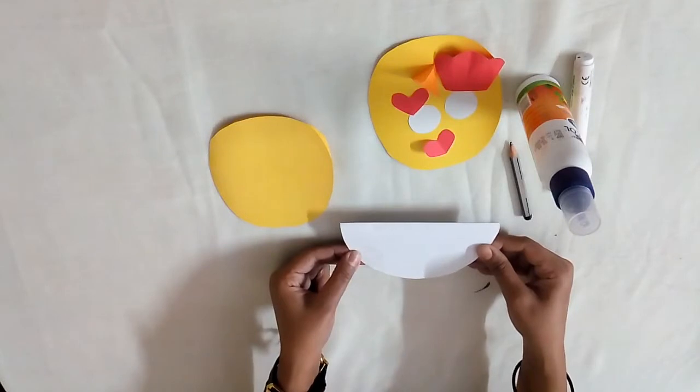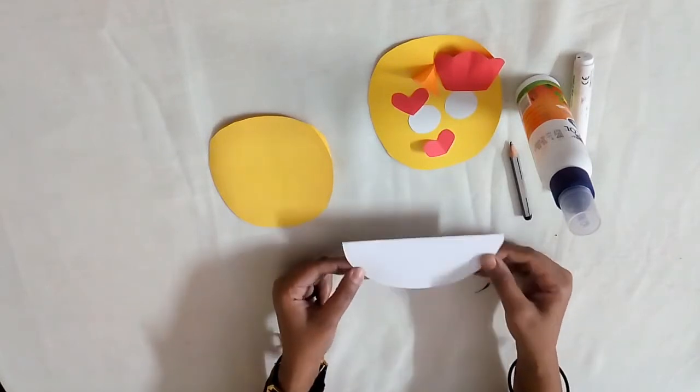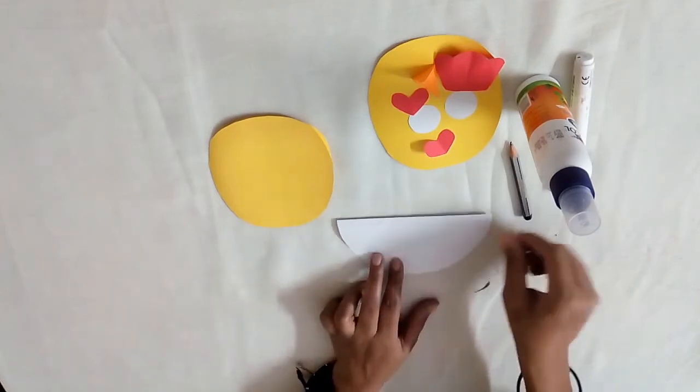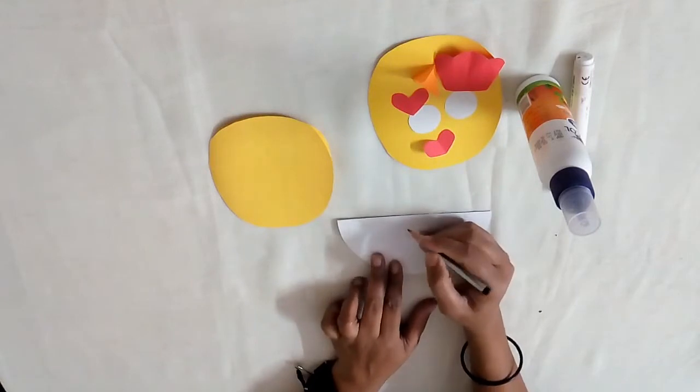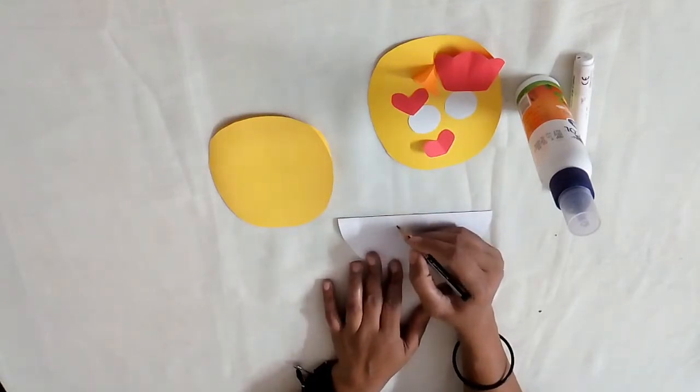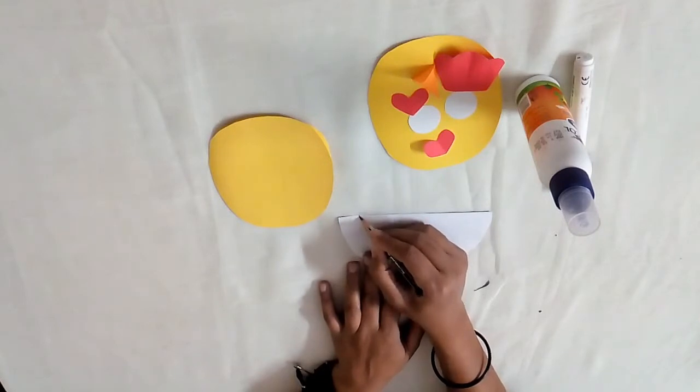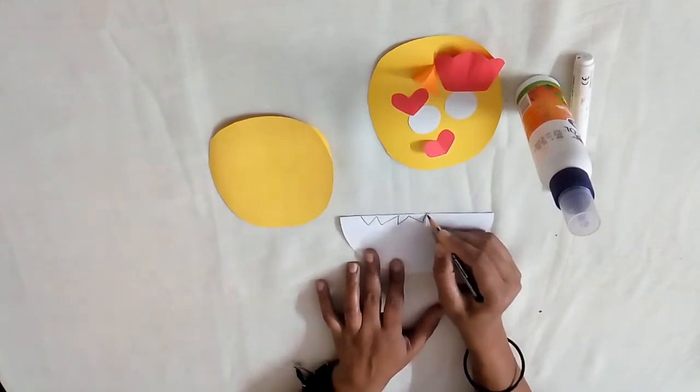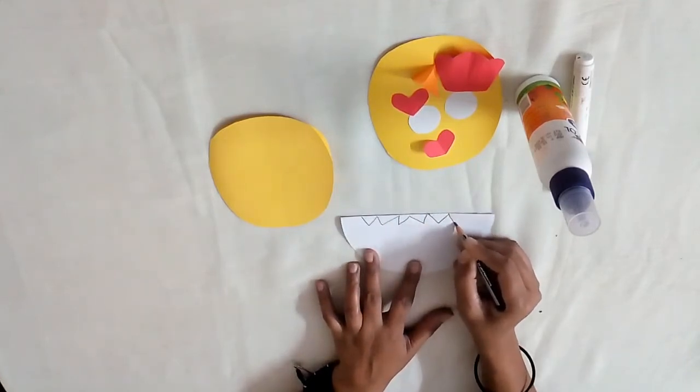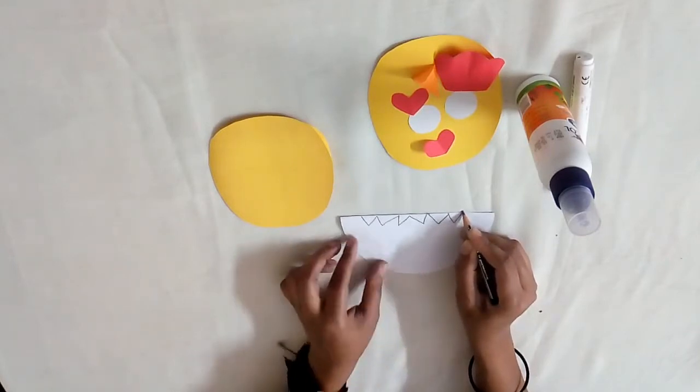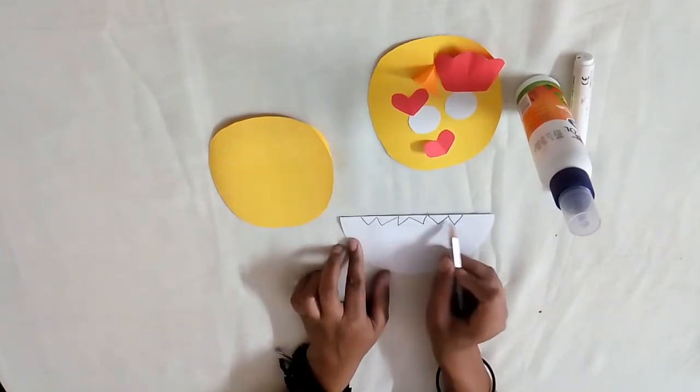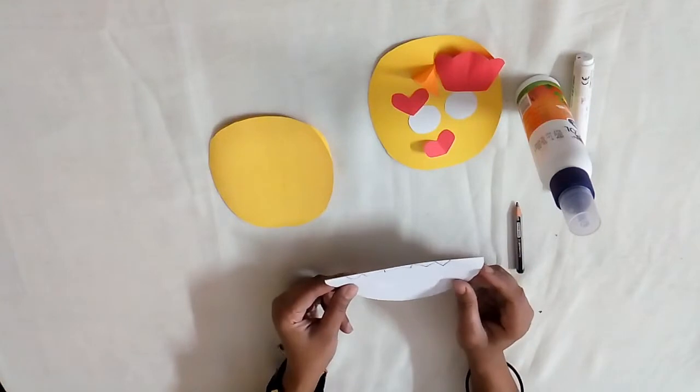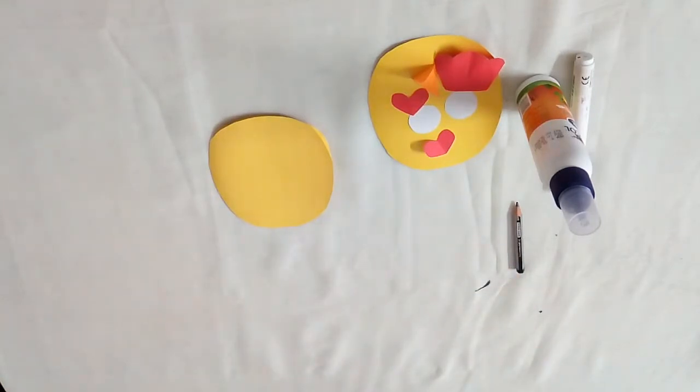Now we will make this semi-circle look like a cracked egg from the top. Use a pencil to draw a zigzag pattern on the folded line. Do not draw the line till the edges. You can take help of your parents to cut. Now the base is ready.